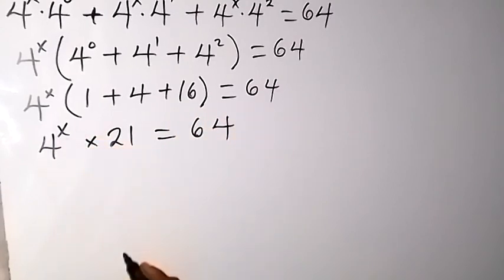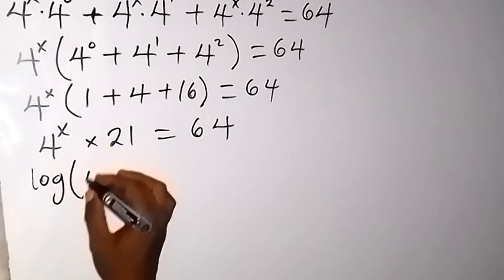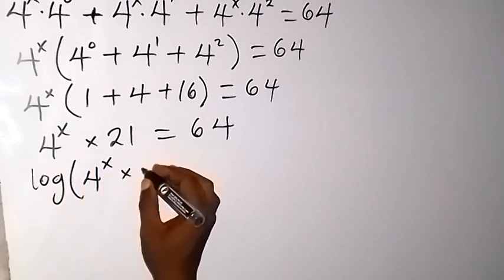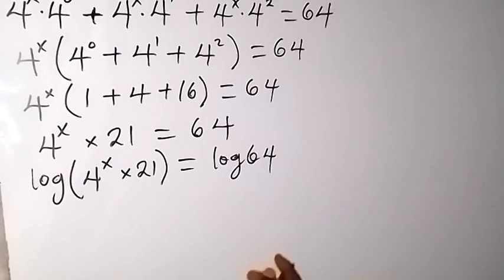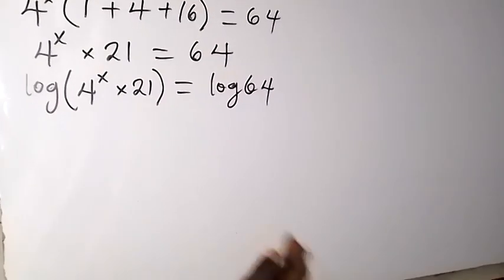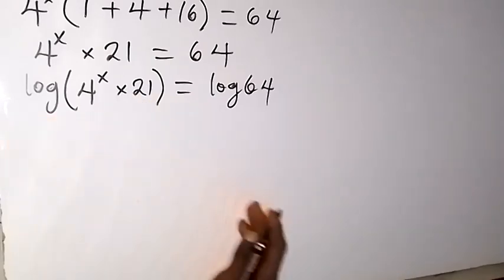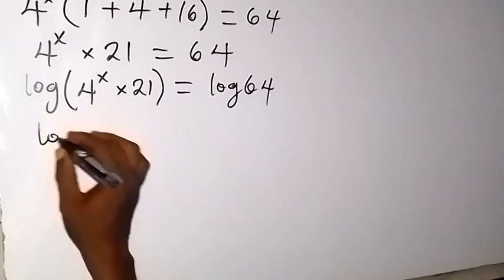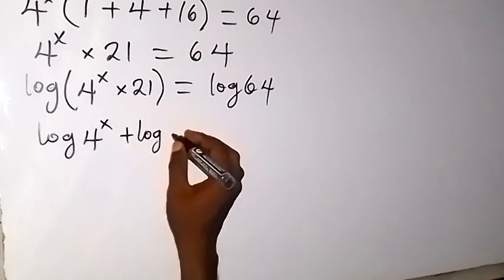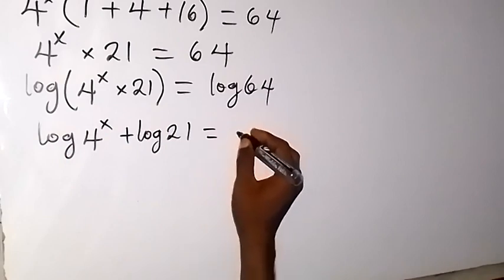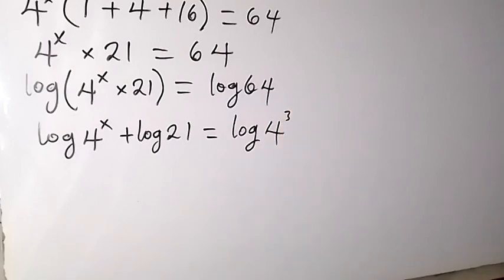Since we are finding the value of x, let's take the log on both sides. That gives us log of 4 raised to power x times 21 equals log 64. Applying the law of logarithms — when we have a product of numbers we can separate it into two logs with addition — we have log of 4 raised to power x plus log 21 equals log 64. We can write 64 as 4 raised to power 3.